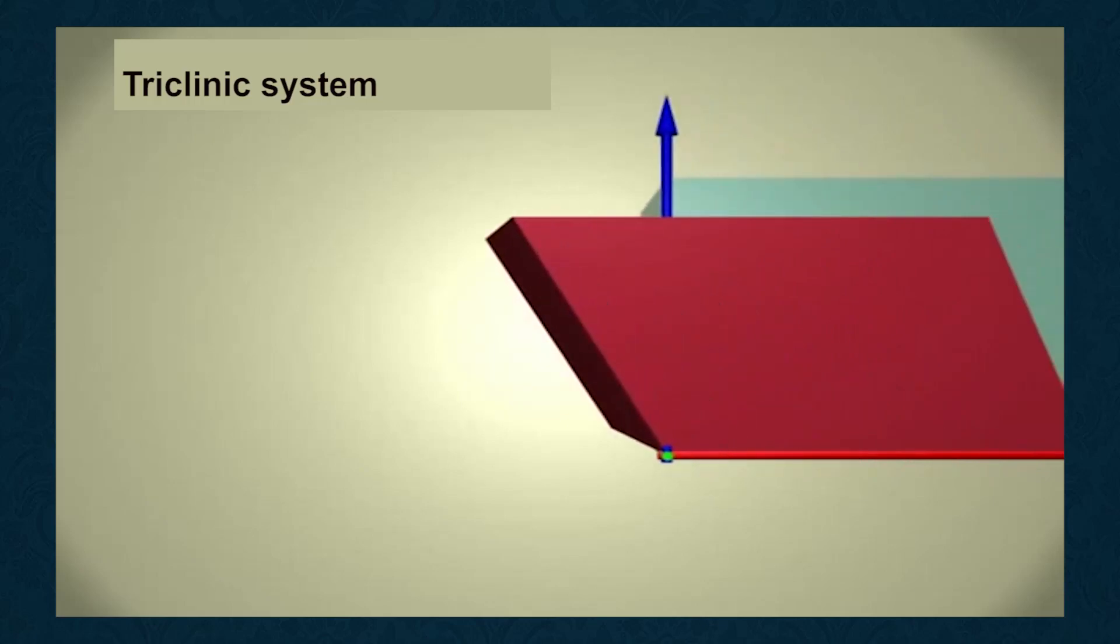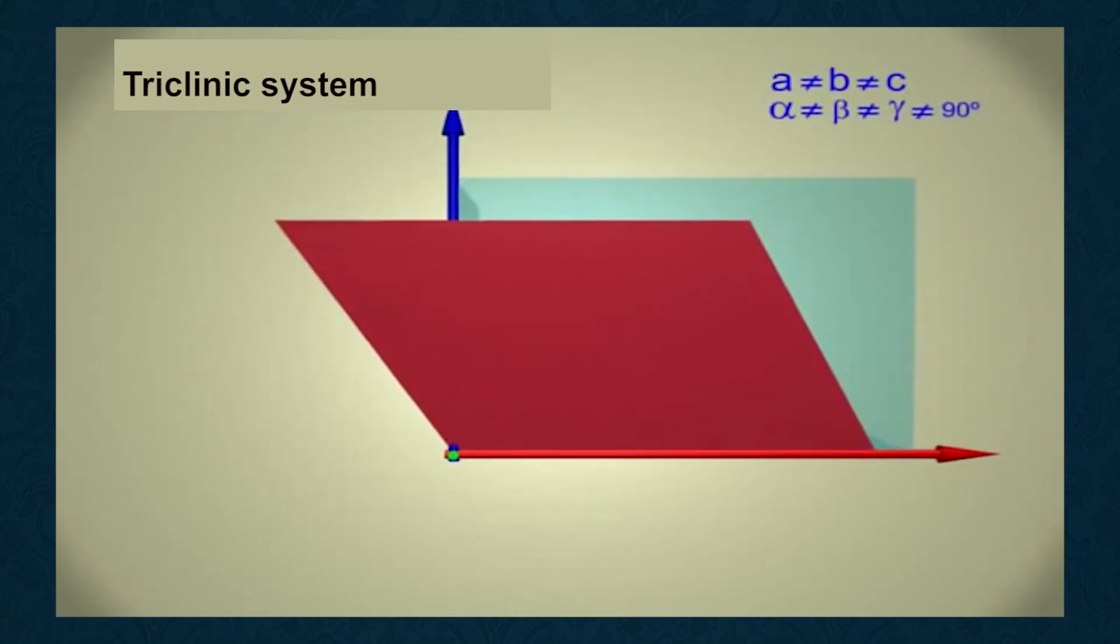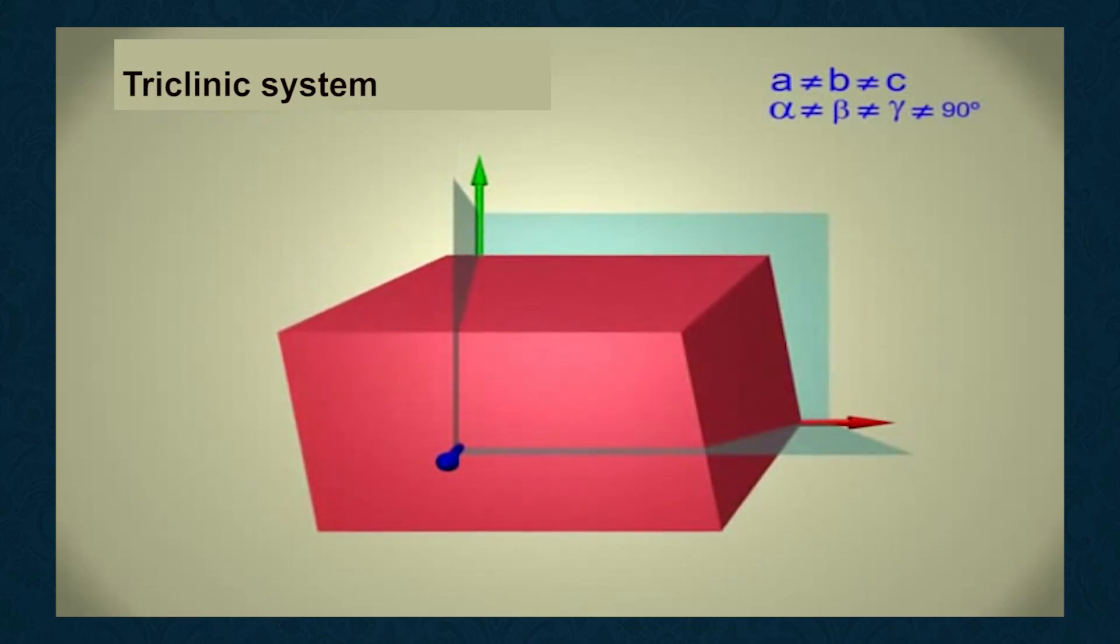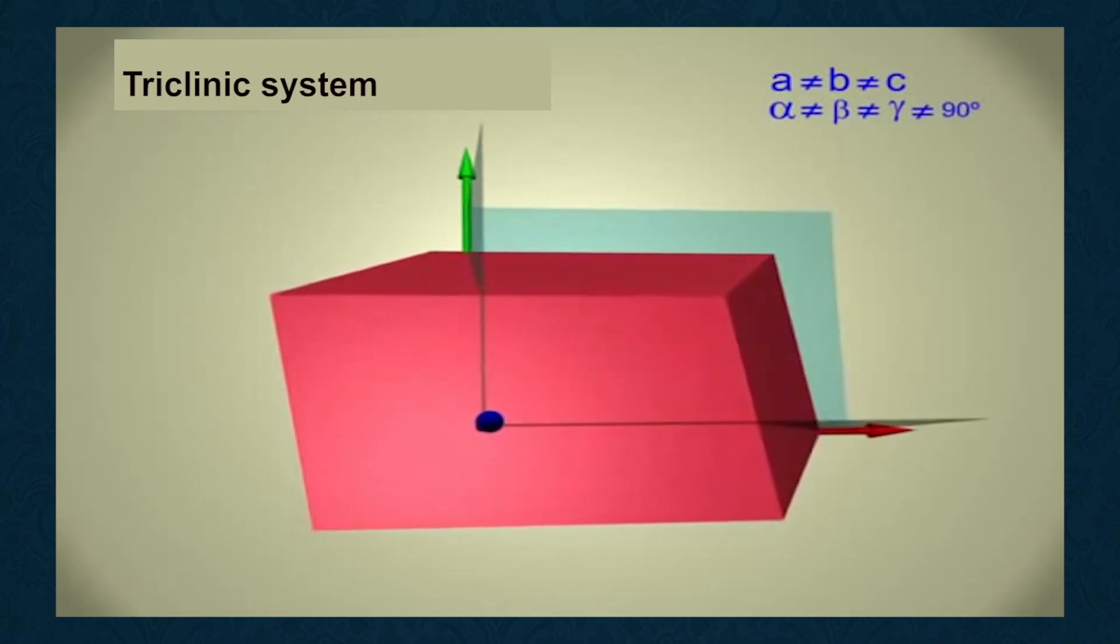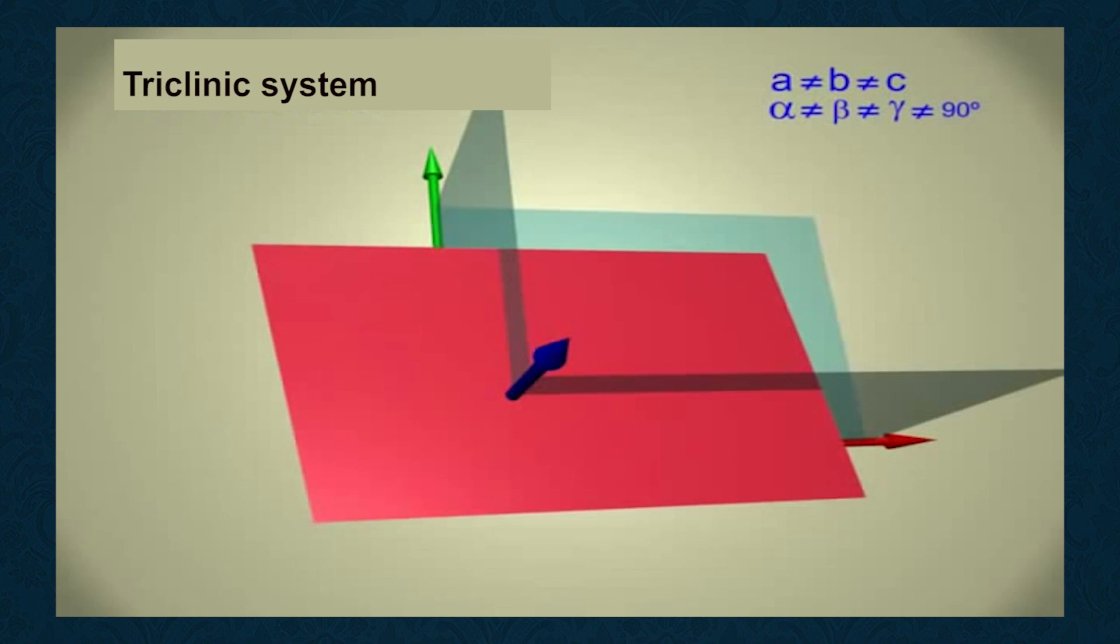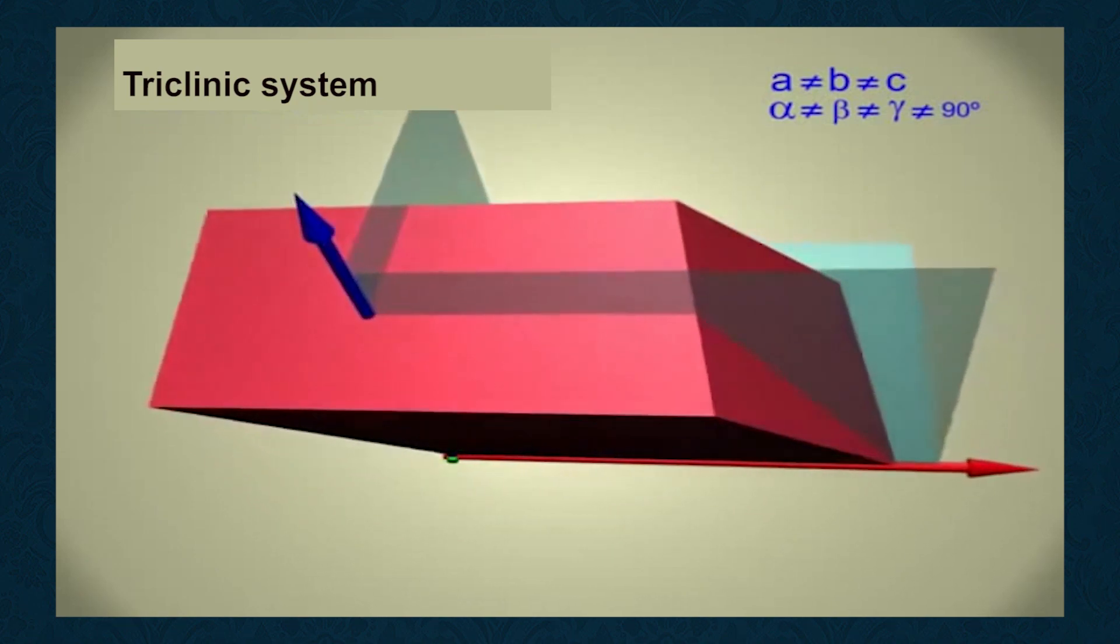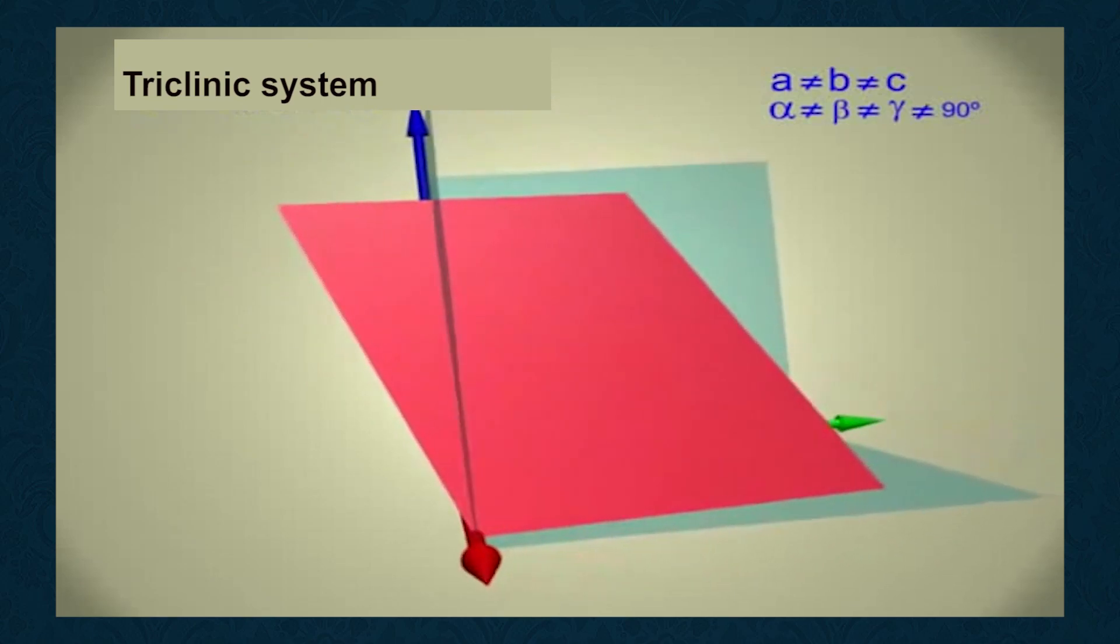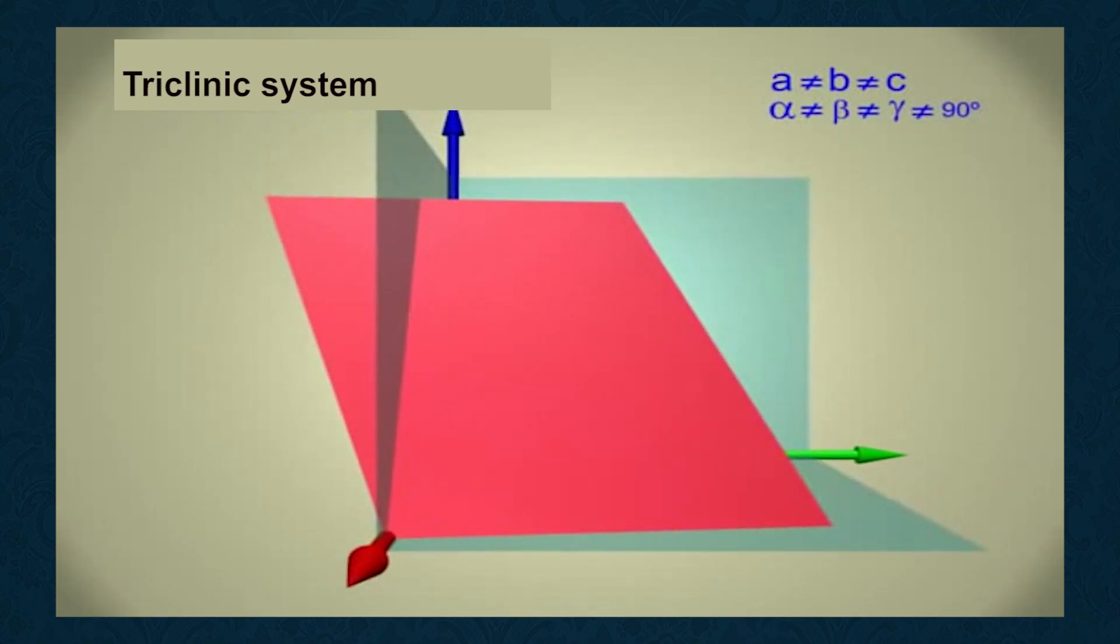Third, triclinic system: Three unequal axes, A ≠ B ≠ C, alpha ≠ beta ≠ gamma ≠ 90 degrees.